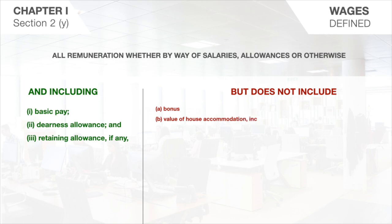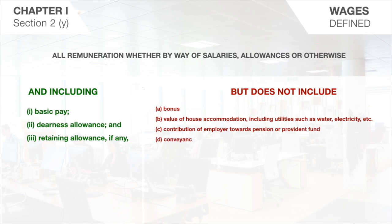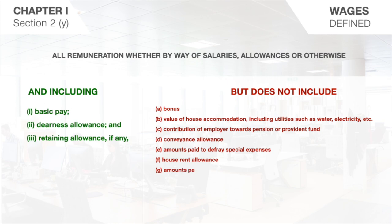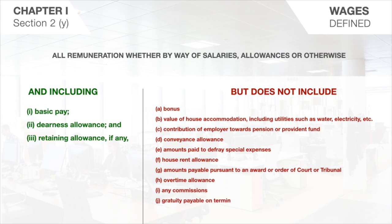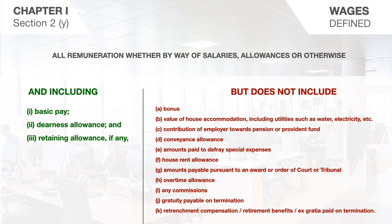The exclusion list under the definition of wages includes: value of house accommodation including utilities such as water and electricity, contribution of employers towards pension and provident fund, conveyance allowance, amounts paid to defray special expenses entailed on the employee by nature of his employment, house rent allowance, amounts payable pursuant to an award of a court or tribunal, overtime allowance, any commissions, gratuity payable on termination, retrenchment compensation, retirement benefits, and ex-gratia payment payable on termination.